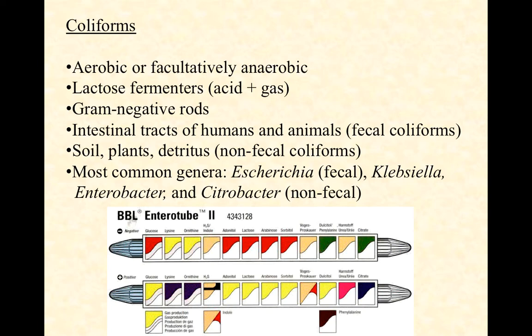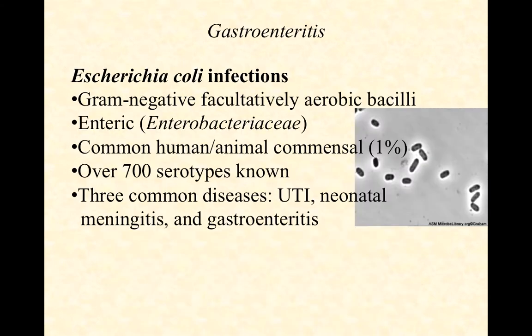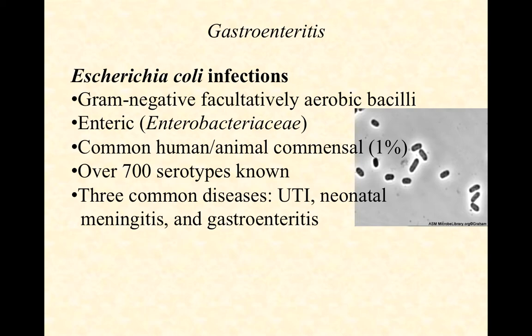You've used the Enterotubes — now called Enteroplure — and the API 20E test strips, which are used for distinguishing the different features of genera within the Enterobacteriaceae family. Gastroenteritis is the primary type of infection we see with coliforms, particularly fecal coliforms like E. coli, though sepsis and urinary tract infections also occur. These are common human or animal mutualists — really mutualists more than commensals, because E. coli provides significant benefits. About 1% of all the bacteria in our gut are E. coli — a relatively small number that plays a pretty big role.